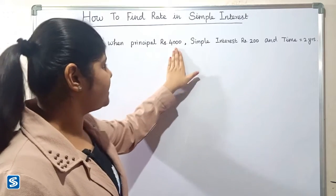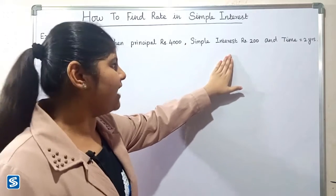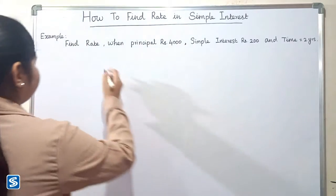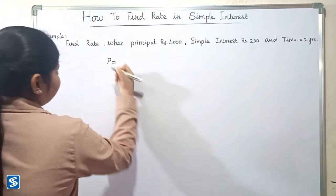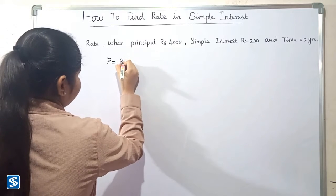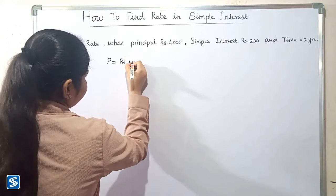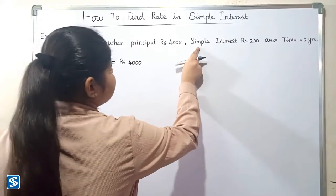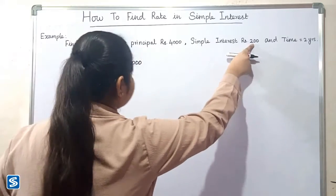is rupees 4,000, simple interest is rupees 200, and time period is 2 years. Here, principal amount is rupees 4,000, simple interest is rupees 200,